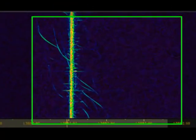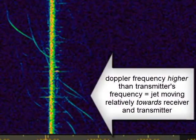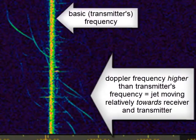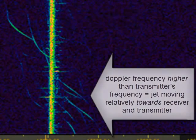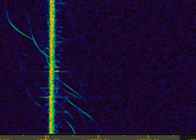If the Doppler frequency is higher than the basic frequency, then this shows that the jet is moving relatively towards me. The higher the frequency and the higher the relative velocity of the jet, the higher the Doppler shift.